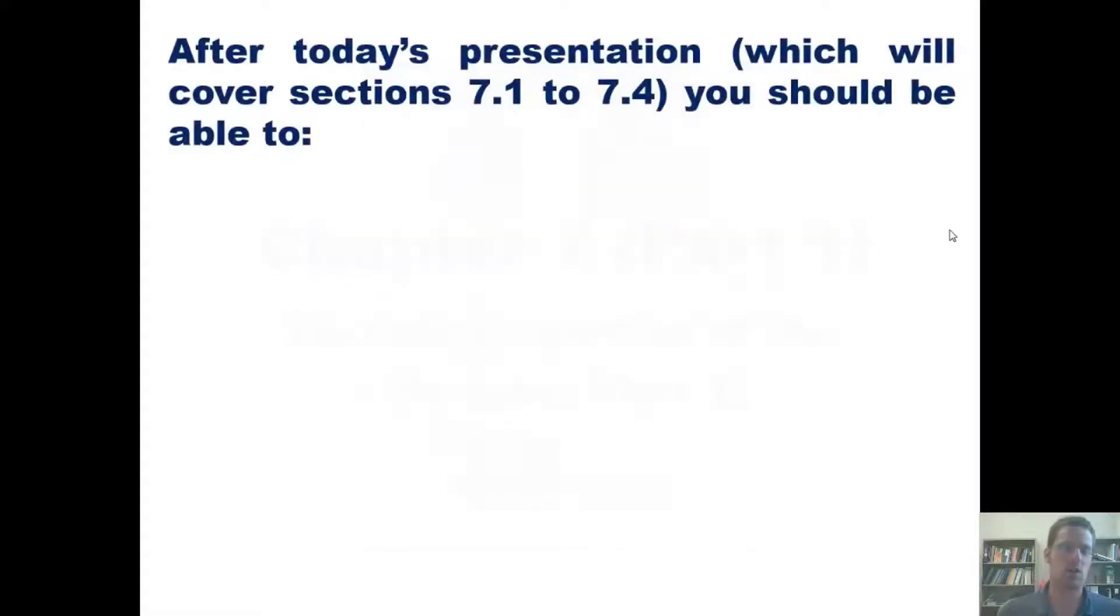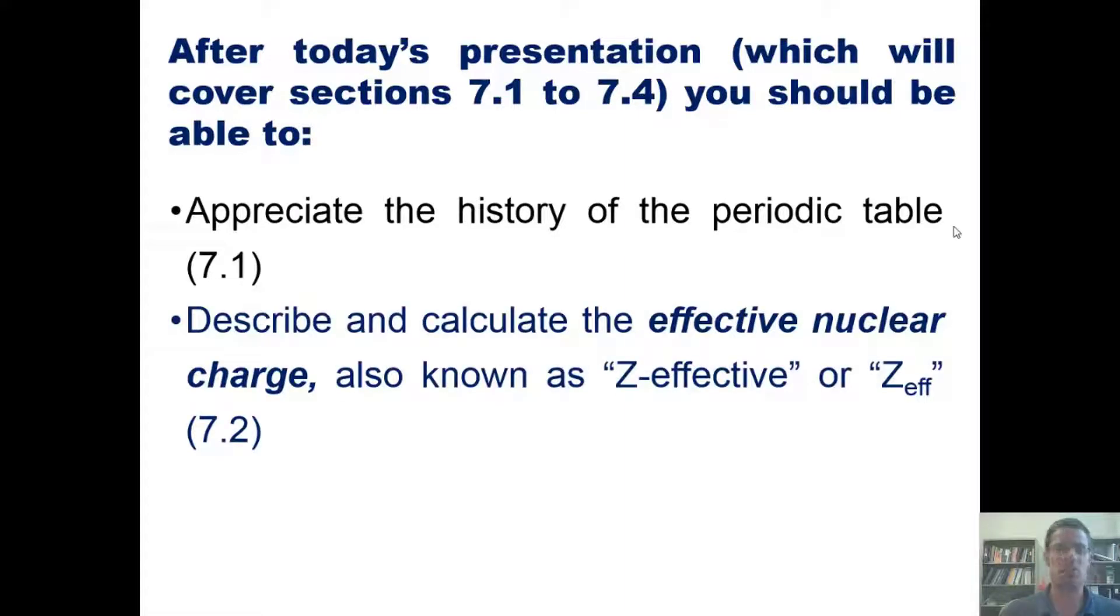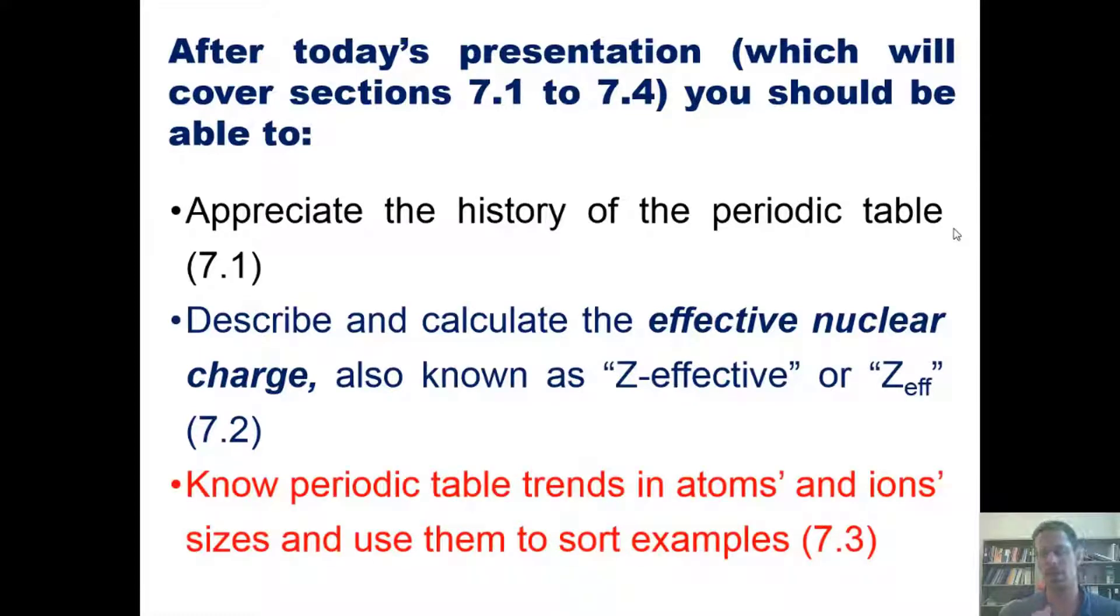After today's lecture, which will cover Sections 1 through 4 from Chapter 7 of our text, you should be able to: appreciate the history of the periodic table, describe and calculate the effective nuclear charge, also known as Z-effective or Z-eff, and know the periodic table trends in atoms and ion sizes and use them to sort examples. Let's begin.